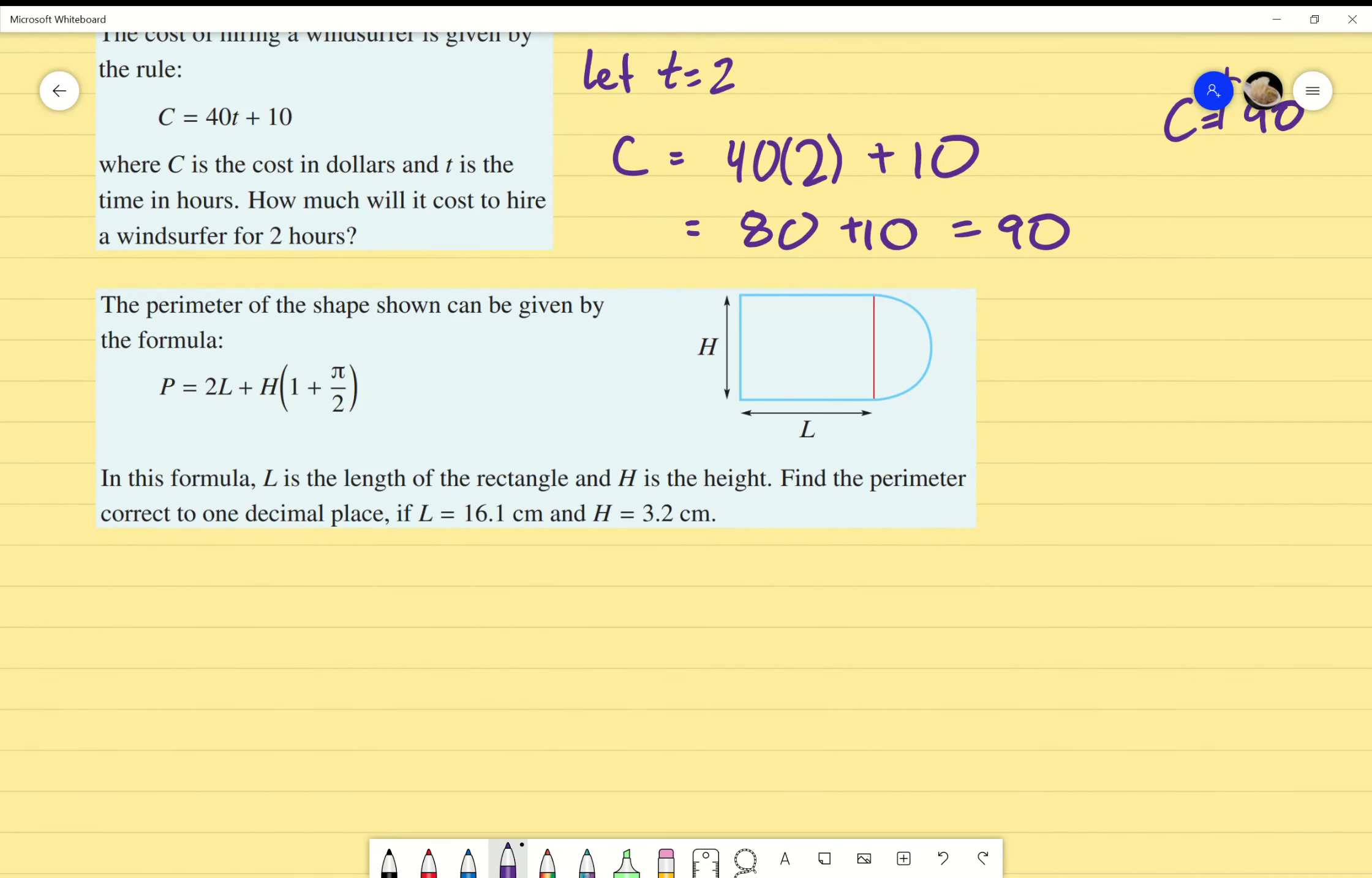The perimeter of the shape shown can be given by the formula where P equals 2L plus H bracket 1 plus pi over 2. Super confusing stuff. So, we're just going to use the formula to substitute the values in to determine the value of, let's say, P. In this formula, L is the length of the rectangle. H is the height. Find the perimeter correct to one decimal place if L equals 16.1 and H equals 3.2.